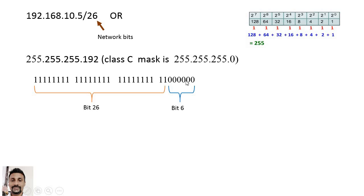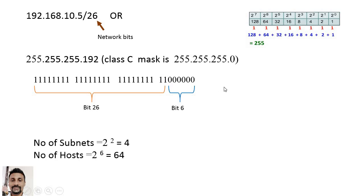The host part now has only 6 bits. Since there are 32 bits for the IPv4 address, subtracting 26 from 32 gives 6 bits as host bits. These two extra bits can be used to create subnets, so we can create 2 to the power of 2, that is 4 subnets. Each subnet can have 2 to the power of 6, that is 64 host addresses.